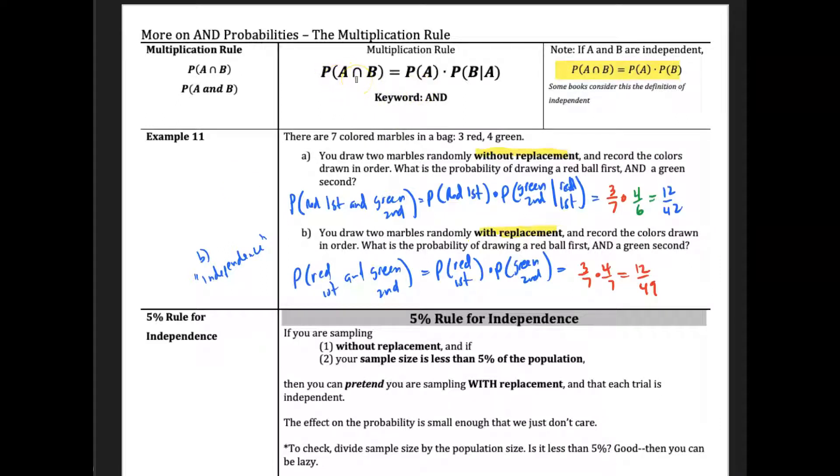Probability of A and B is equal to the probability of A times the probability of B occurring, given that we know A already occurred. It's a sequence of two events. Now, if the events are independent, then I don't have to worry about this conditional probability. It's just the probability of A times the probability of B.